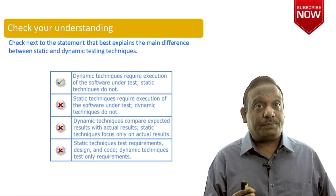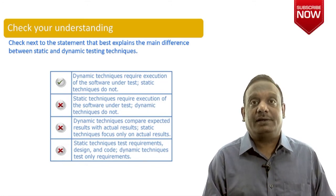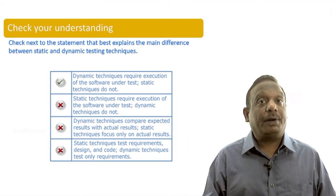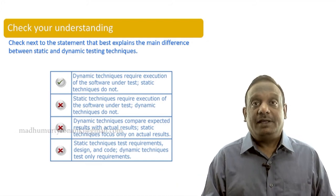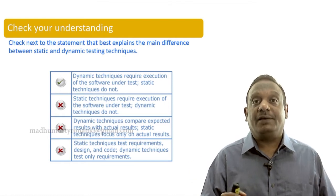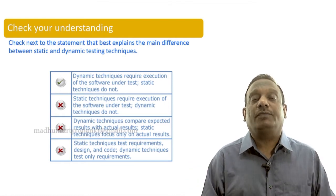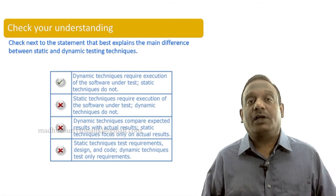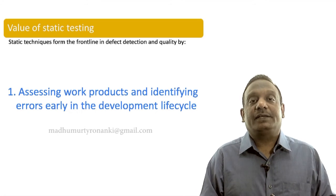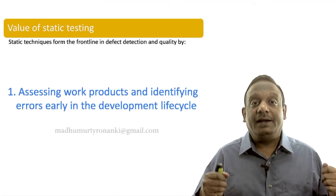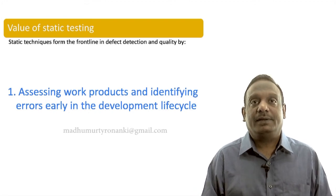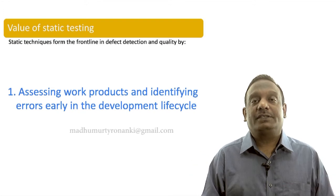Static testing is done very early in the lifecycle, using people to review various artifacts and tools to automatically analyze source code and sometimes design models. Because it is done early, there are a lot of values of static testing. The first value is that we can assess work products and identify errors early in the development lifecycle.